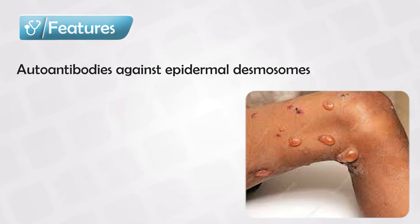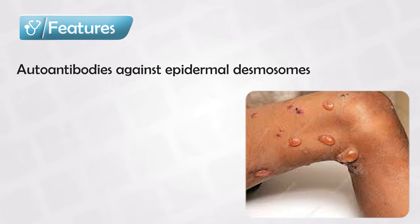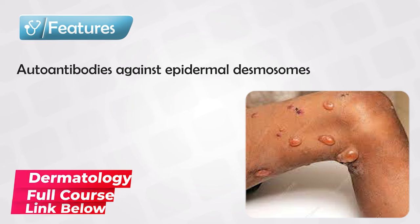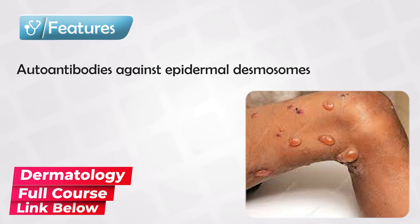Pemphigus vulgaris is the result of autoantibodies against the desmosomes. As you may remember from the cell junction video, desmosomes connect the cells together, so if they are destroyed, the cells become loose. Specifically, the autoantibodies destroy desmoglein 1 and/or desmoglein 3, which are components within the desmosome.